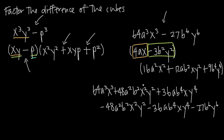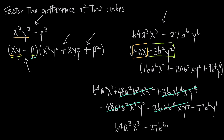We've multiplied everything out. Now we combine like terms. The positive 48a squared b squared x squared y squared and the negative 48a squared b squared x squared y squared cancel to zero. The positive 36ab to the fourth xy to the fourth and the negative 36ab to the fourth xy to the fourth also cancel to zero. We're left with 64a cubed x cubed minus 27b to the sixth y to the sixth, which is our original problem — confirming we did our factoring correctly. That's how you factor the difference of two perfect cubes.